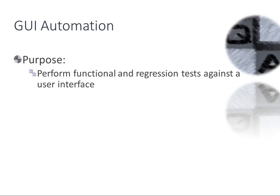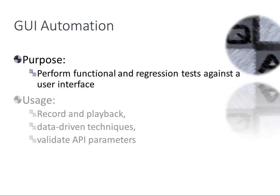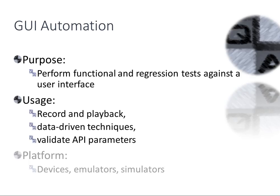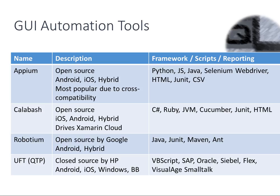Let's start with GUI automation — graphical user interface automation. The purpose is to perform functional and regression tests against the user interface. When people say 'automate my phone,' they usually mean automating testing of functional and regression tests of the user interface. Capabilities include recording and playback, data-driven techniques, and validating API parameters — writing test scripts against the UI, rerunning them, testing input parameters and expected results. Platforms include physical devices, emulators, and simulators.